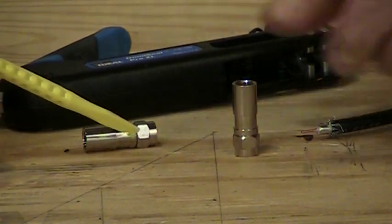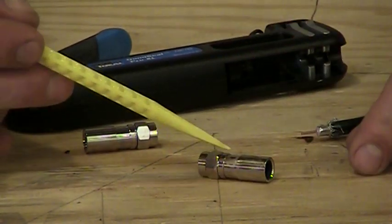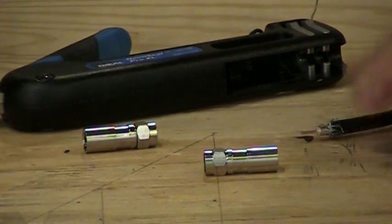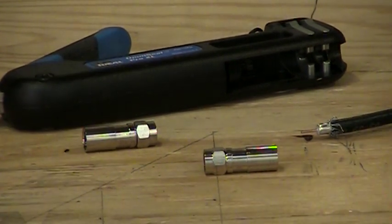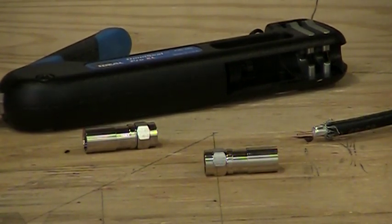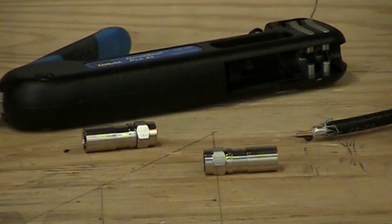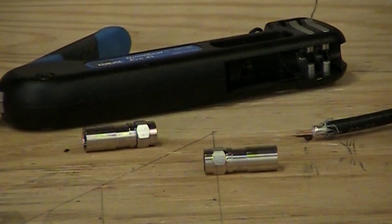Now, the connector we have in front of us here is called a universal RG6. It will work with RG6, it would work with quad shield, and it would also work with something called tri-shield coax, which is a coax with a foil, a braid, and an extra layer of foil, or quad is foil braid, foil braid.